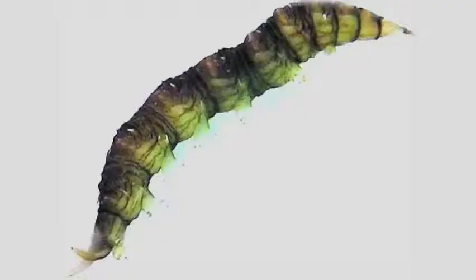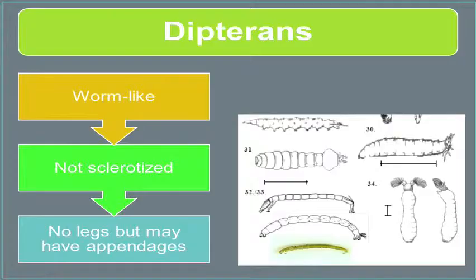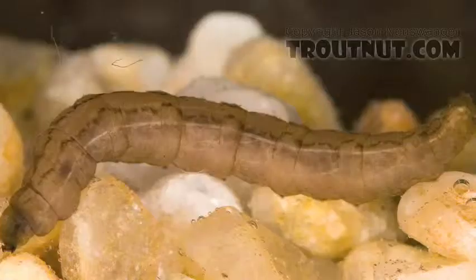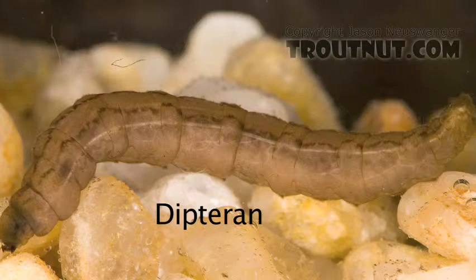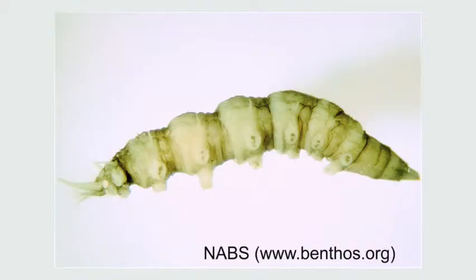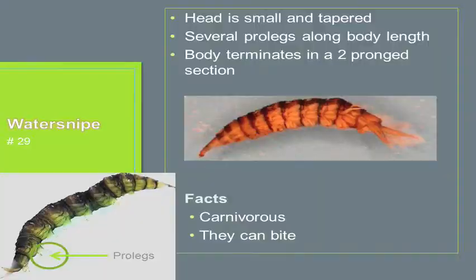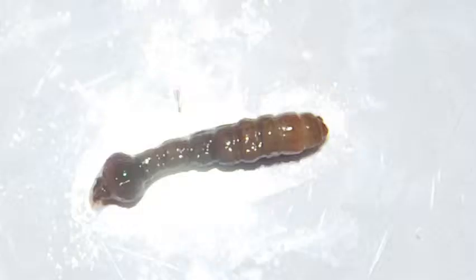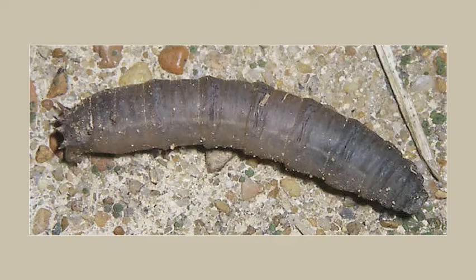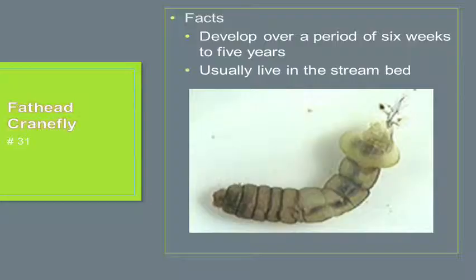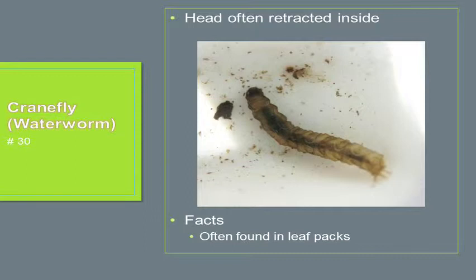Dipterans: if you get a gross, wormy-looking little thing, you most likely have a dipteran. Once you make sure there are no legs — if there are legs, you probably have a caddisfly or some other aquatic insect — if there are no legs and it's worm-like, you most likely have a dipteran. This is a water snipe — very tiny and worm-like, with small leg-like protrusions on the underside. This is a fat-headed crane fly, which could be easily mistaken for a water worm. The difference is a fat-headed crane fly will blow up one end of its body every now and then and then contract it. If it never does that after about 15 seconds, you've got a water worm; if it blows up its head, you've got a fat-headed crane fly.